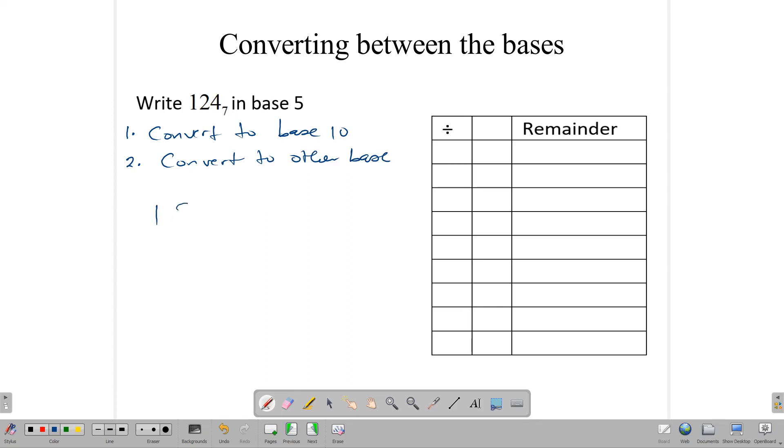So let us convert 124 base 7 to base 10. To do that, remember, we have 124 base 7. So we're going to go up in powers of 7. So this is the 7 to the 0, then 7 to the 1, then 7 to the 2. And that tells us that here, remember, 7 to the 0 is 1, 7 to the 1 is 7, and 7 squared is 49.